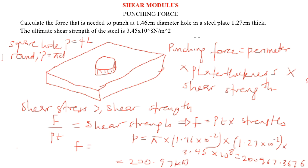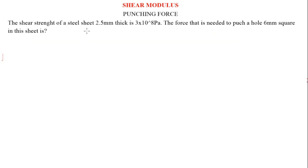In my previous video I explain what ultimate shear strength means — check that video. Now let's solve another practice problem. I advise that you pause this video and attempt it, then share your answer in the comment section. The shear strength and thickness are given, and we need the punching force for a square hole.